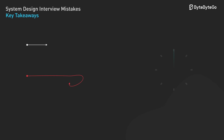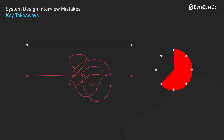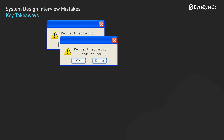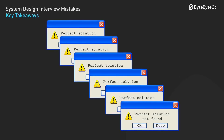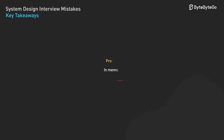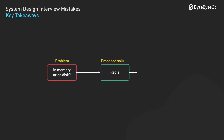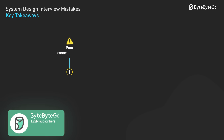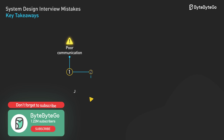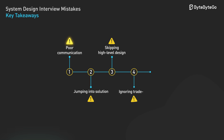System design interviews test your ability to solve ambiguous problems under time pressure. There's no perfect solution — every design involves trade-offs. Your job is to understand requirements, propose a reasonable solution, and clearly explain your reasoning. Practice these patterns, avoid these common mistakes, and you will be well prepared for your next system design interview.